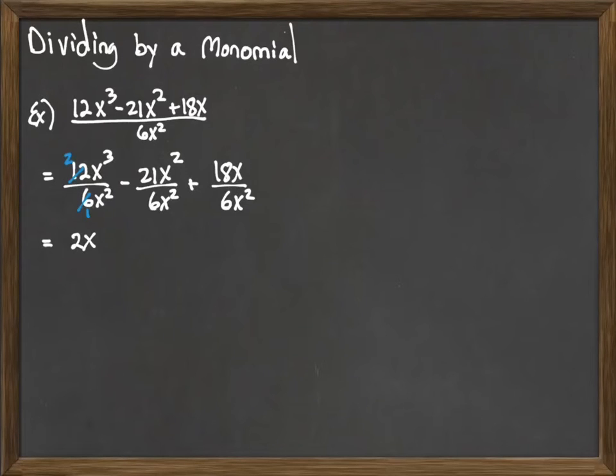We then move to the second fraction, 21x²/6x². 21 and 6, we can reduce that by taking 3 out of both, giving us 7 and 2. Now with x² over x², you can think of that a couple different ways: same thing in the top and bottom, it cancels out. Or use your properties—2 minus 2 would be 0, and x⁰ is 1. Either way, we get -7/2. The variable term is gone.